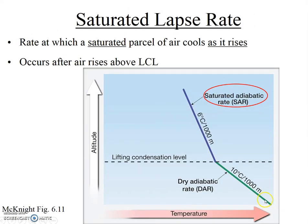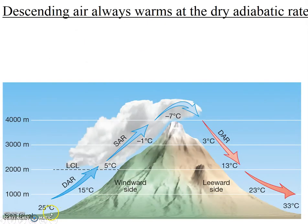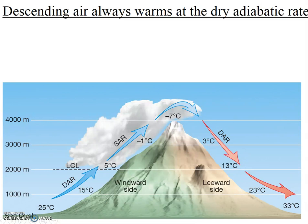We use the dry adiabatic lapse rate to calculate the temperature of rising air up until the air is at 100% relative humidity, and after that we use the saturated adiabatic lapse rate to calculate the temperature of the rising air. You should be able to perform these calculations. As air rises, it drops in temperature 10 degrees for every 1,000 meters up until the lifting condensation level, where the air is saturated at 100% relative humidity. After that, it only drops 6 degrees for every 1,000 meters.